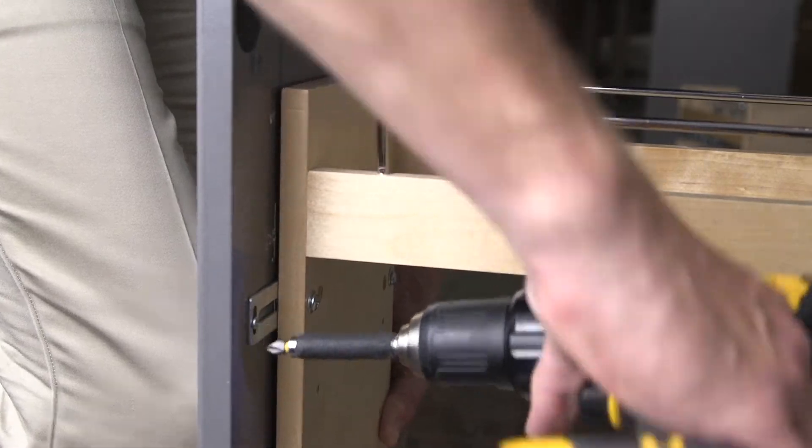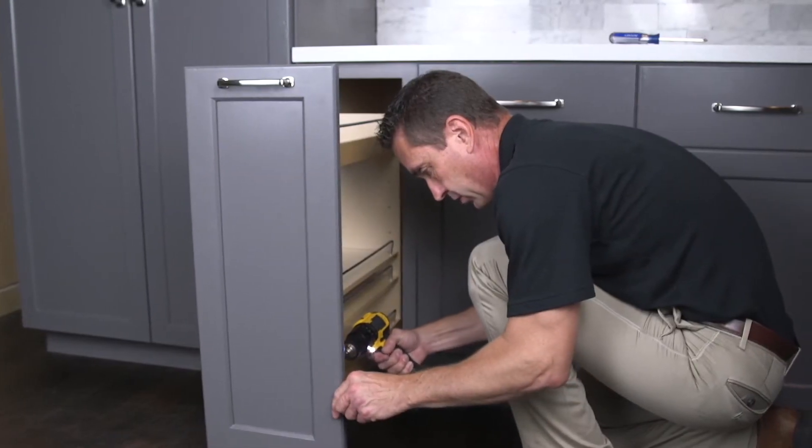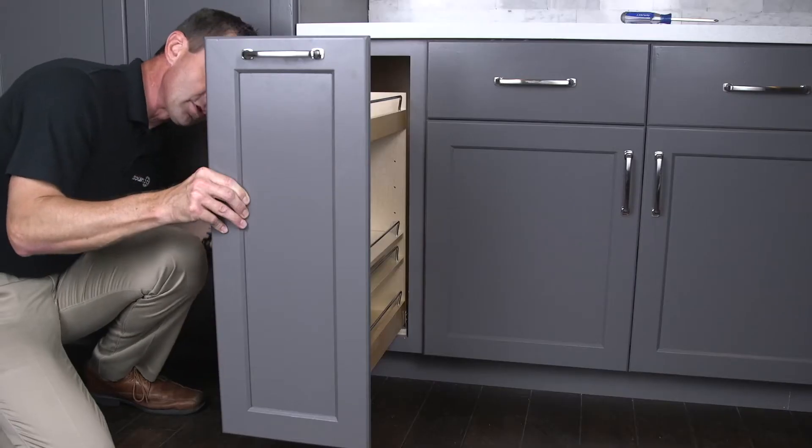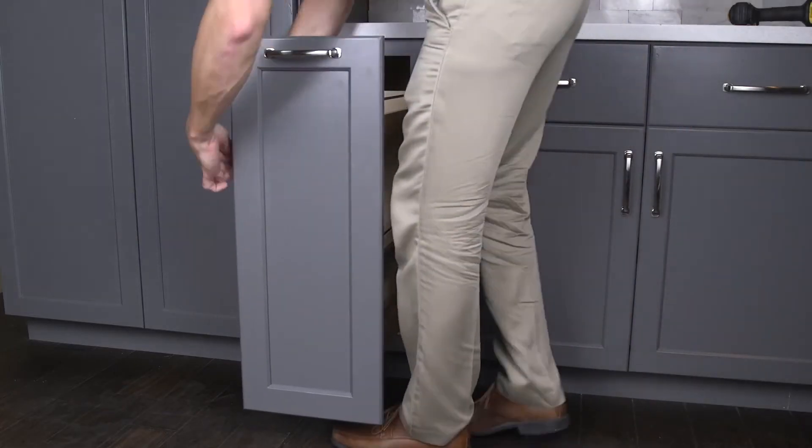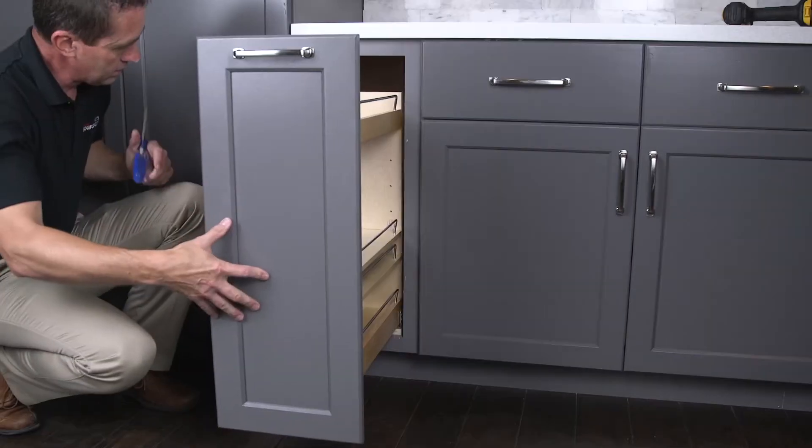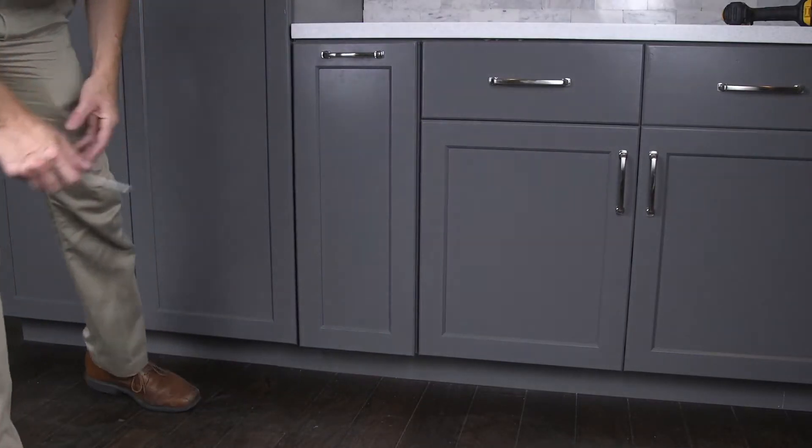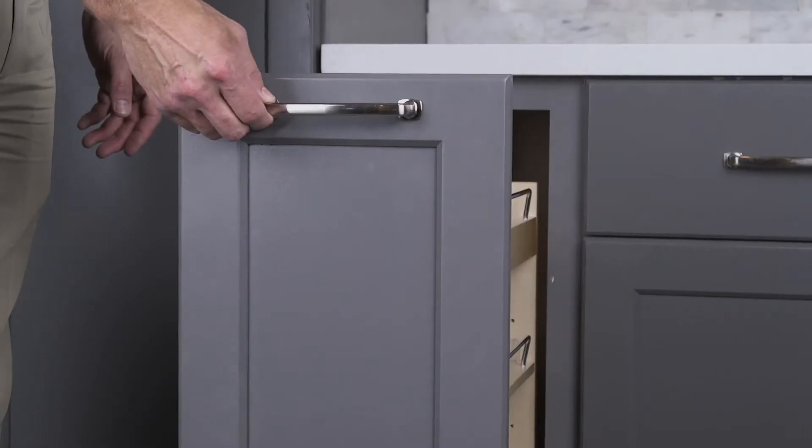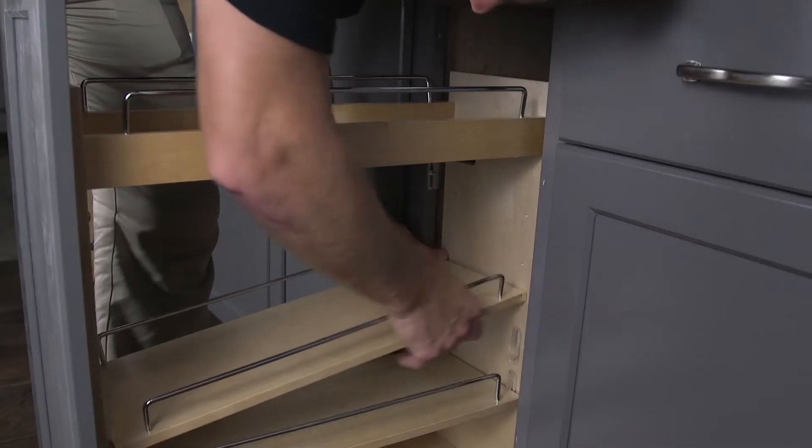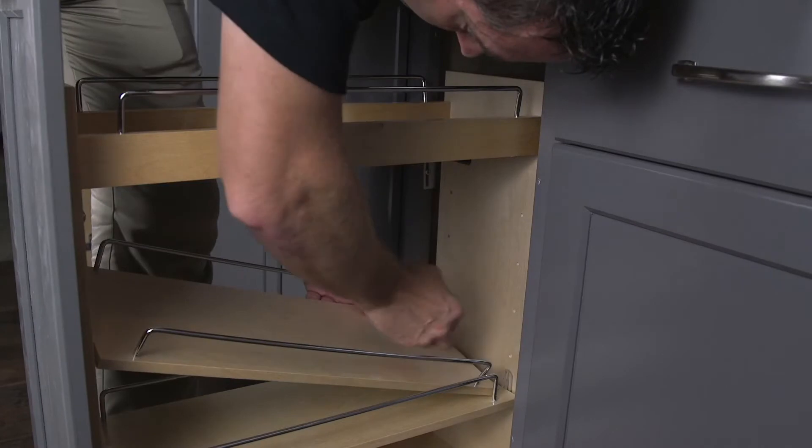Attach the door with the four number eight by five-eighths inch pan head wood screws and adjust as needed. Adjust the shelves by moving the shelf pins to your desired heights.